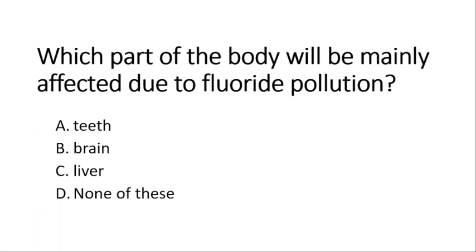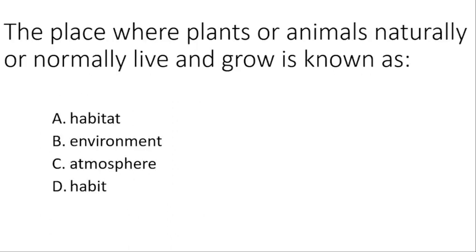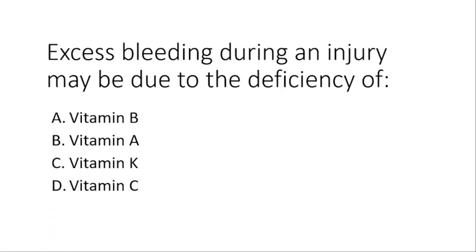Which part of the body will be mainly affected due to fluoride pollution? The correct answer is teeth. Although a moderate amount of fluoride is usually considered good for tooth health, if taken in excessive amounts it not only causes fluorosis in teeth but also badly affects bones and joints. Next question: the place where plants or animals naturally live and grow is known as — the correct answer is habitat.